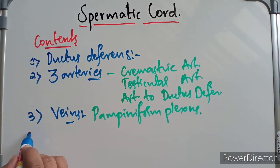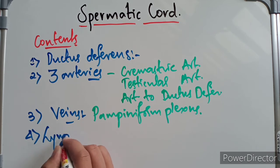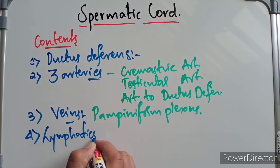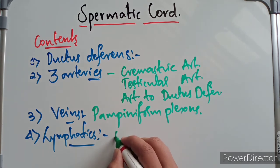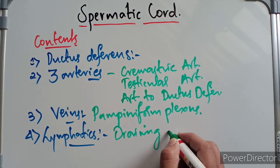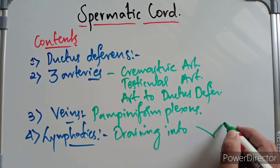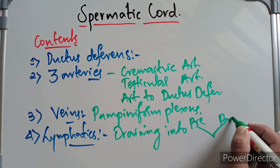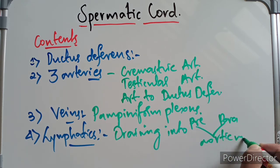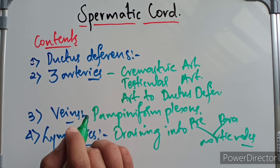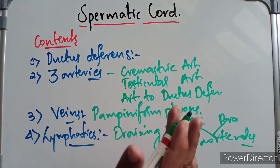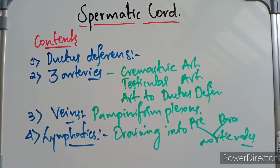The fourth group is the lymphatics, especially from the testicles, draining into the pre-aortic and para-aortic nodes. Then we have the genital branch of the genitofemoral nerve and the remains of the processus vaginalis. These are the main constituents or contents of the spermatic cord.